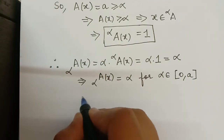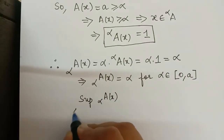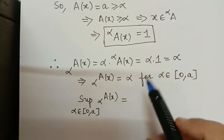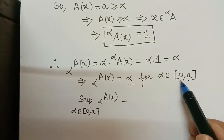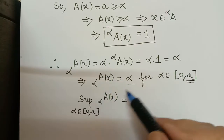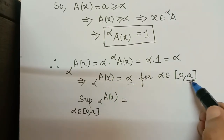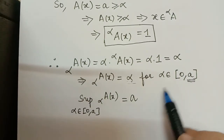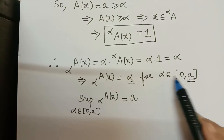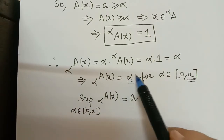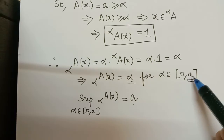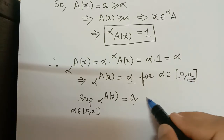Now we want the supremum of αA(x) where alpha is in [0, a]. Since αA(x) = alpha in this interval, the supremum of alpha over [0, a] is the highest value alpha can take, which is a, because a is included in the closed interval. Therefore, the supremum equals a. We mark this as equation 3.